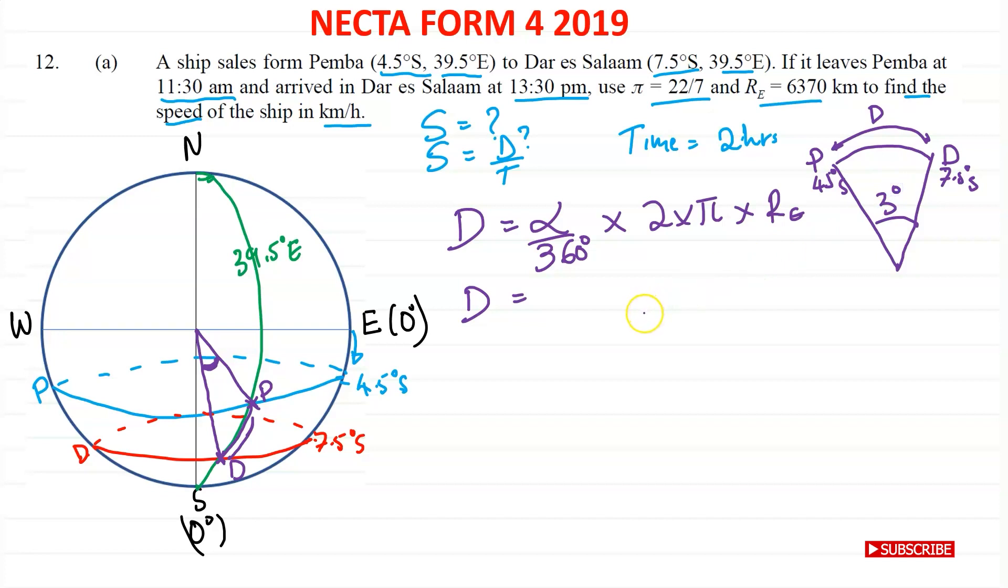So the angle that you need alpha is 3. So now we're just going to substitute that in as 3 over 360 times 2. And we're told to use pi as 22 over 7. And the radius of the earth is 6370. If you calculate this, you will get 333.67 kilometers. All right, so now we have our distance.